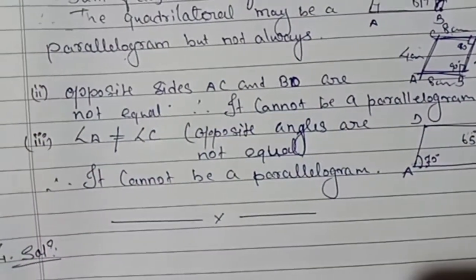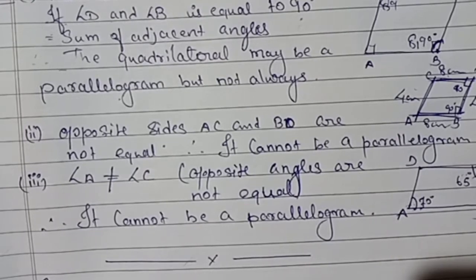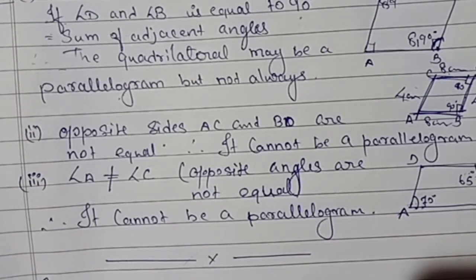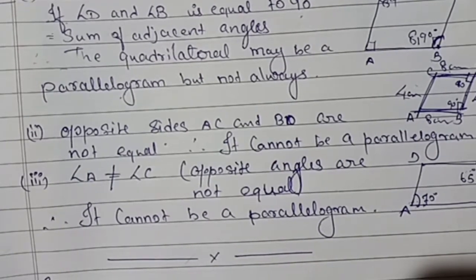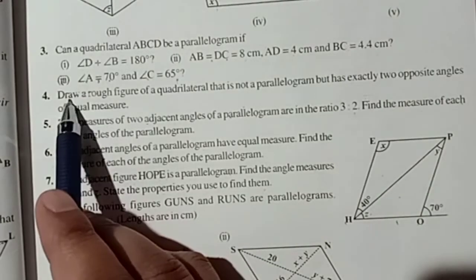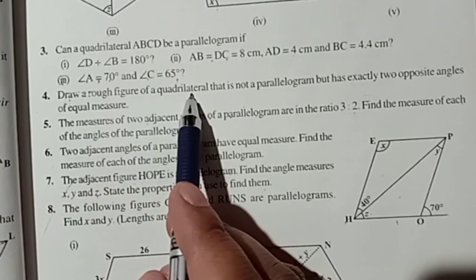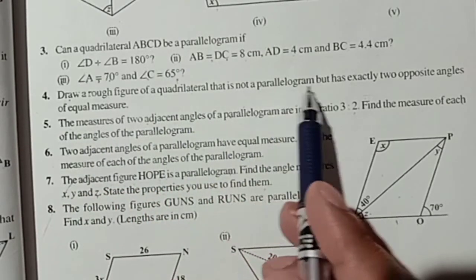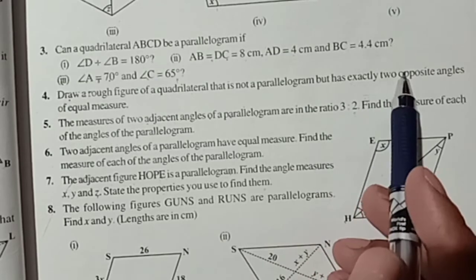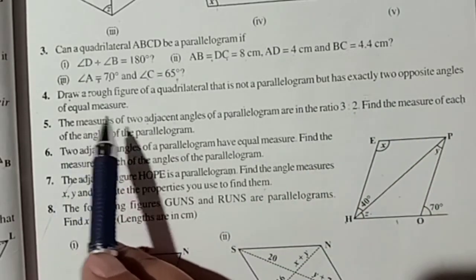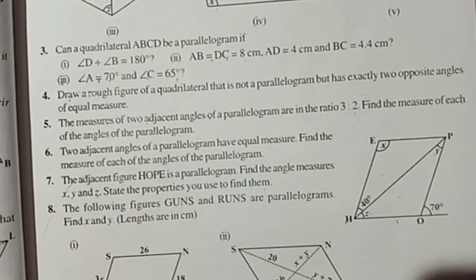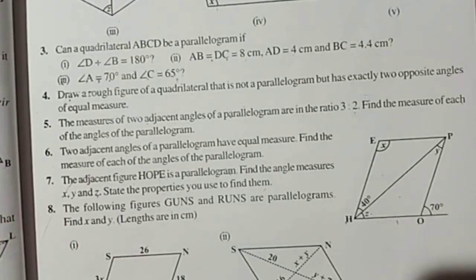So this is your solution number 3. I hope students all of you are clear with this. If there is any doubt or queries, you can ask. Now question number 4: Draw a rough figure of a quadrilateral that is not a parallelogram but has exactly two opposite angles of equal measure.